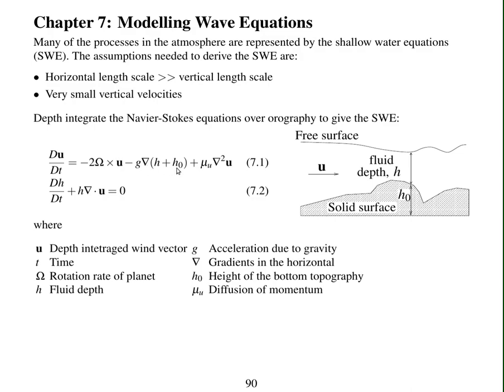The pressure gradient has turned into a mixture between gravity and a change in height. This h is now the fluid depth. So we have a solid surface of height h0, a fluid depth, and a horizontal velocity.